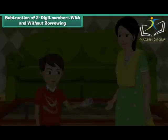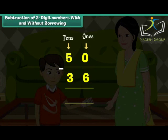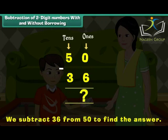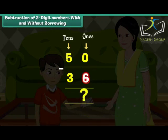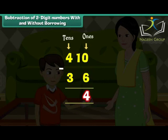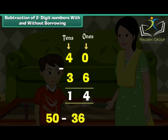Anuj's mother gave him 50 rupees. He spent 36 rupees at the Christmas carnival. How much is he left with? We subtract 36 from 50 to find the answer. 0 is less than 6, so it borrows 1 from 5 and becomes 10. 10 minus 6 is equal to 4. 5 has lent 1, so it becomes 4. 4 minus 3 is equal to 1. Therefore, 50 minus 36 is equal to 14. Anuj has 14 rupees left.